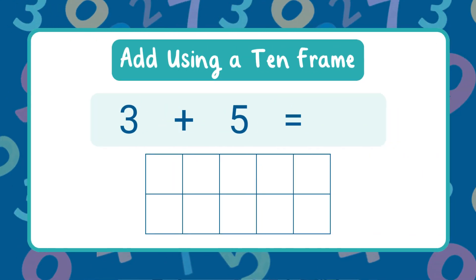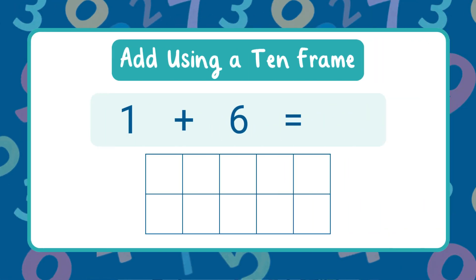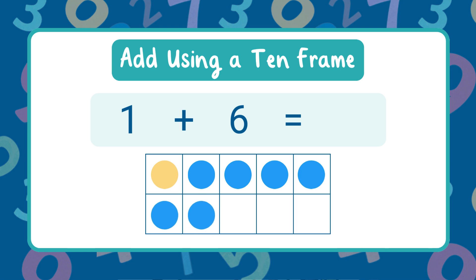What is three plus five? Let's count. The sum is eight. Try this one — what is one plus six? Let's count. The sum is seven.